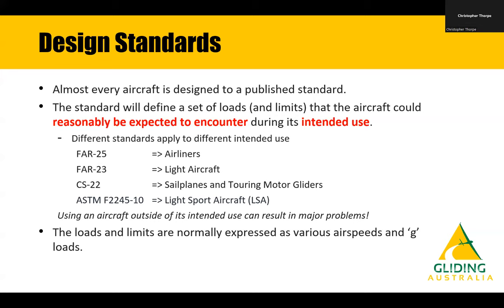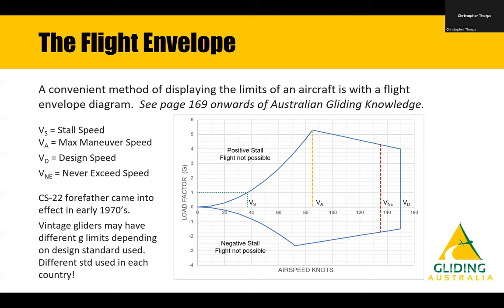These loads and limits are normally expressed as various airspeed and g-loads, which we can then display as a flight envelope diagram. We have a made-up, fictitious diagram — not from a real airplane — but it does reflect the current minimum envelope from CS22. We have g-load on the vertical axis and airspeed on the horizontal axis. This describes the safe areas that a sailplane is intended to be used for its wing and centre fuselage. We can make up a similar diagram for the horizontal tail and for the vertical tail.